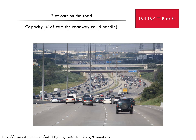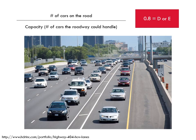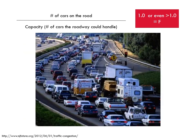In this next example, we're adding a couple more cars — I'm looking at an LOS of B or C. Here, things are getting a bit dicey, probably around a 0.8, probably an LOS of D or E. And here, things have really tipped over — we're at one or maybe even greater than one. This is an LOS of F. Nobody wants to drive here.